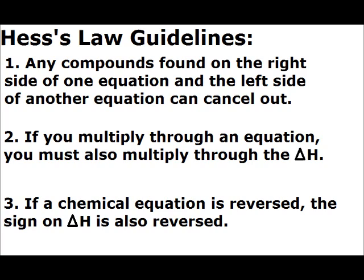Number three: if a chemical equation needs to be reversed, the sign on delta H should also be reversed. If you flip a reaction so that two things will cancel out, you're flipping the entire process — so anything endothermic becomes exothermic, and vice versa. You're not changing the numerical value of delta H, but you are flipping the positive or negative sign associated with that number. So those are the three major things: cancel on left and right, multiply through including delta H, and flip the sign when reversing equations.